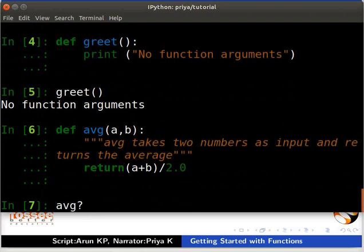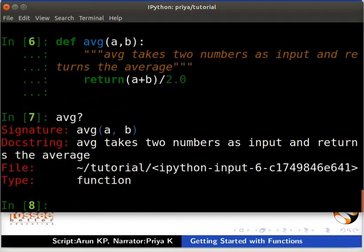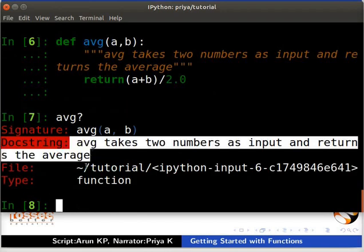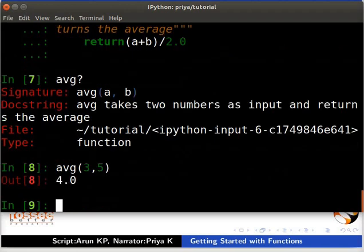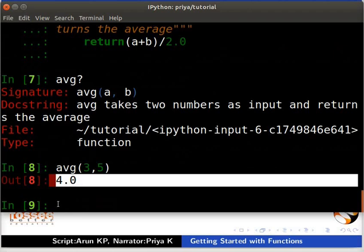Comments within triple quotes give a clear explanation about the code. Type avg question mark. Here we can see the doc string of the function avg. Now, let us pass 3 and 5 as values to the arguments a and b to the function avg. Type avg inside brackets 3 comma 5. We get 4.0 as output.